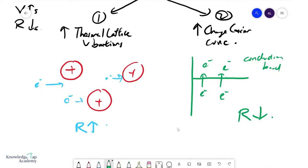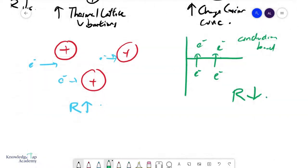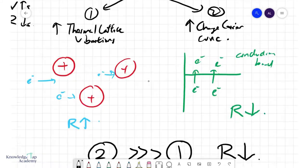What is important to understand is that for an NTC thermistor, or for a semiconductor in general, effect number two is much larger than effect number one, and therefore, overall, your resistance will decrease.